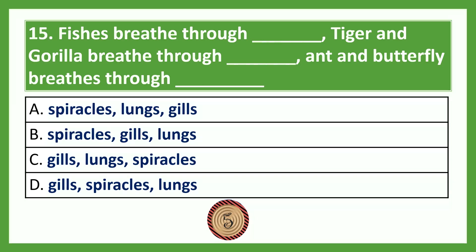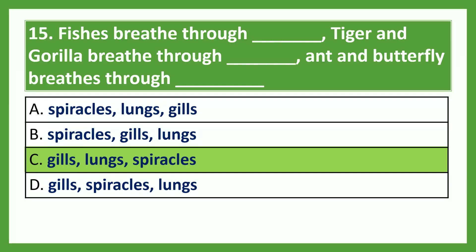Fishes breathe through dash; tiger and gorilla breathe through dash; and butterfly breathe through dash. Option A: spiracles, lungs, gills; Option B: gills, lungs, spiracles; Option C: gills, spiracles, lungs; Option D: gills, spiracles, lungs. The answer is Option C. Fishes breathe through gills; tiger and gorilla breathe through lungs; ant and butterfly breathe through spiracles.